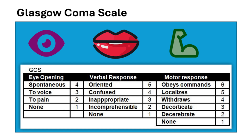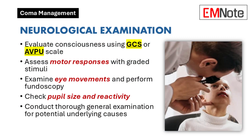Next, we need to assess the level of consciousness using the Glasgow Coma Scale — the GCS. We all learn it, but sometimes we just go through the motions without really thinking about it. Along with the GCS, don't forget the pupils — how are they reacting to light, what's their size? That gives you a window into the brainstem.